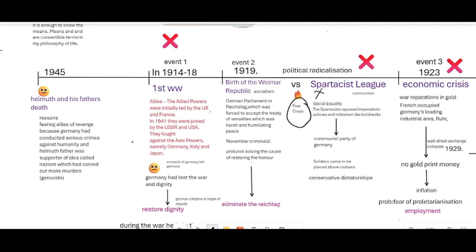The monarch of Germany had left without any political representation. To restore dignity, German citizens hoped for respite and chose democracy as their political representation. Eventually the Weimar Republic was formed on the basis of socialism and the German parliament, the Reichstag, was formed. But the Reichstag was forced to accept the Treaty of Versailles, giving away most of Germany's land to the allied powers and demanding war reparations, which was very harsh and humiliating.